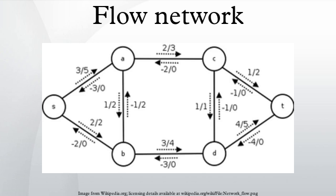A flow would then be one possible way for water to get from source to sink so that the total amount of water coming out of the outlet is consistent. Intuitively, the total flow of a network is the rate at which water comes out of the outlet. Flows can pertain to people or material over transportation networks, or to electricity over electrical distribution systems. For any such physical network, the flow coming into any intermediate node needs to equal the flow going out of that node.